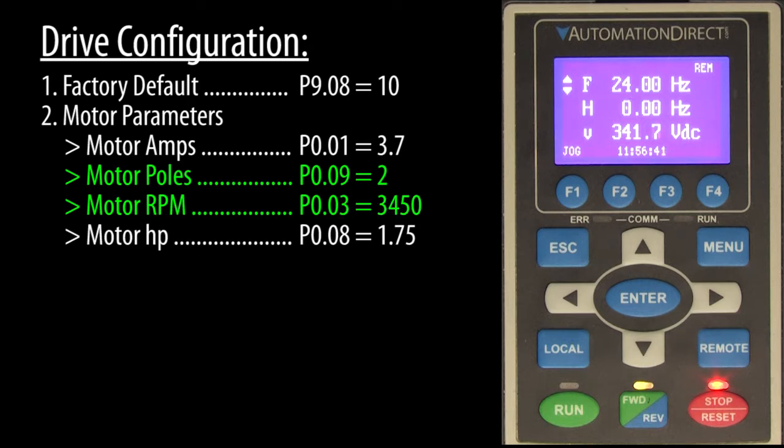I love that the GS4 is smart like that and it won't let me screw it up, but if you don't know to look for the poles parameter, you might wonder why you can't change the RPM above 1800. So set the poles parameter first if you're using a high speed motor.